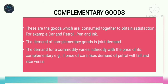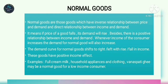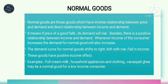The next one is the normal good. Normal goods are those goods which have an inverse relationship between price and demand. There is also a direct relationship between income and demand. It means if the price of a good falls, its demand will rise.